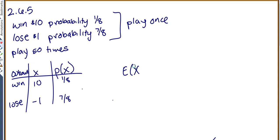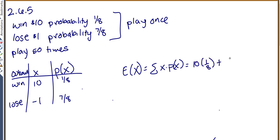So the expected value, looking at what happens when you play once, is going to be the sum of each x times the probability of that x. So it'll be 10 times 1/8 plus negative 1 times 7/8, which equals 3/8. Our expected value is actually positive, so this is a pretty nice game where you probably will win more than you lose.